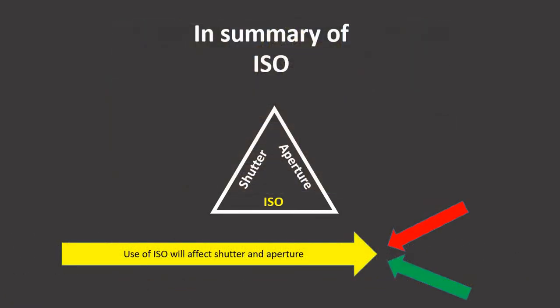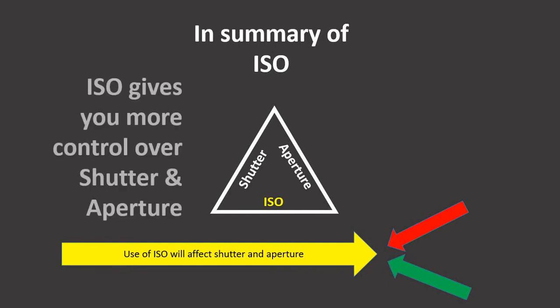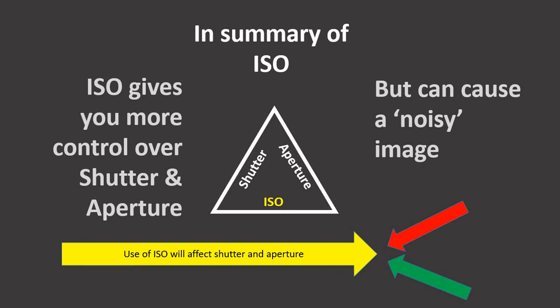In summary: use of ISO will affect aperture and shutter. Use aperture and shutter first, and then consider if you need to use ISO beyond that. ISO gives you more control over shutter and aperture but it causes grain and noise.